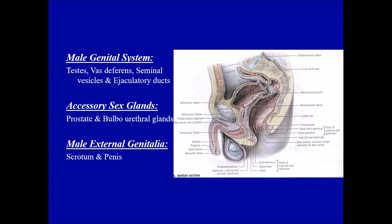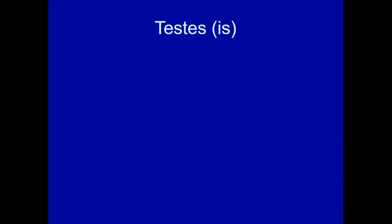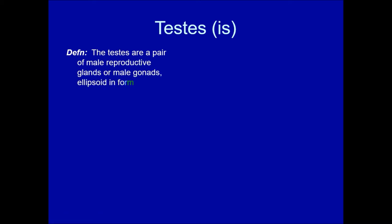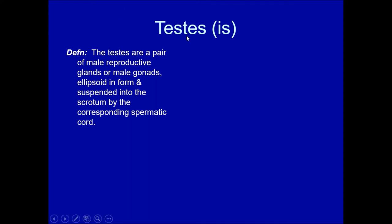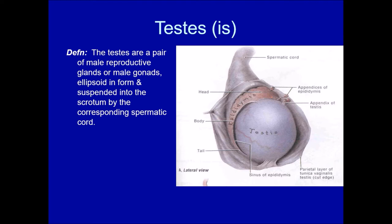Today we'll mainly talk about the male genital system — the primary structure in the male reproductive system called the testes. Testes is the plural form; the singular is testis. Because we have a pair, it is always denoted as testes. The testes are a pair of male reproductive organs, also called the male gonads.